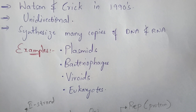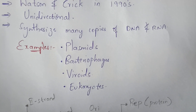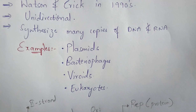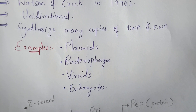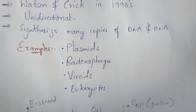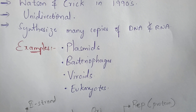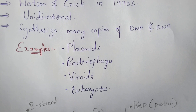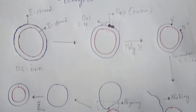In viroids, the RNA is in circular form, so it exhibits rolling circular replication. In eukaryotes, some consist of DNA and some consist of RNA — both DNA and RNA undergo rolling circular replication. The important point to remember is that rolling circular replication is only applicable to genetic material that is in circular form.